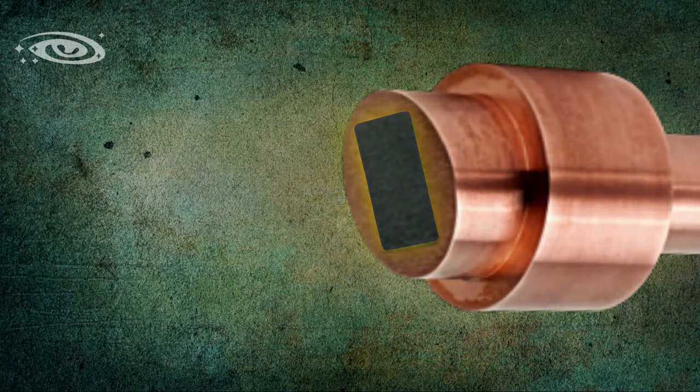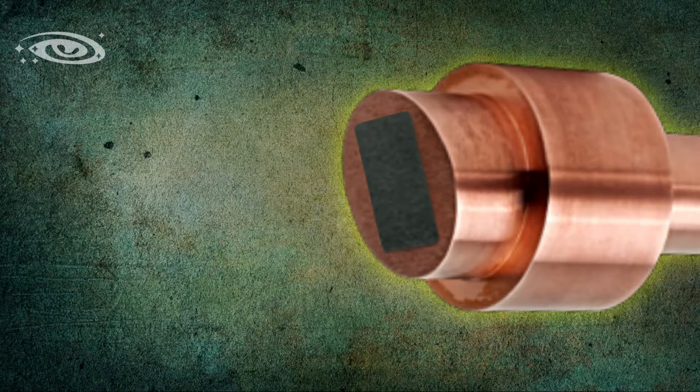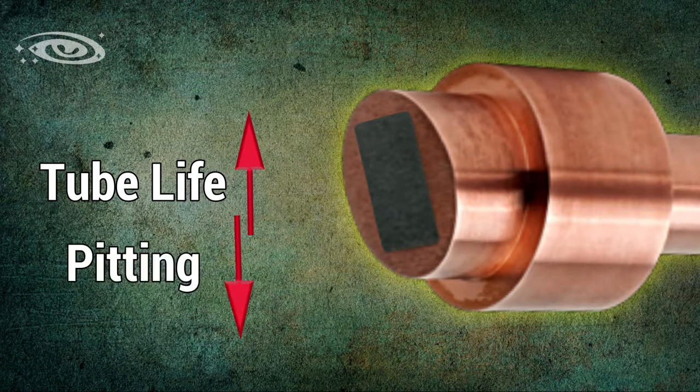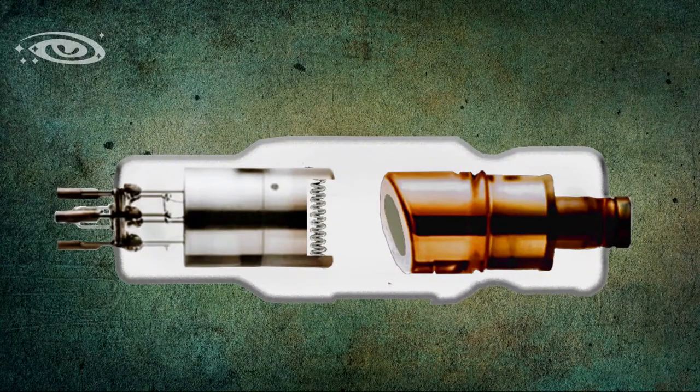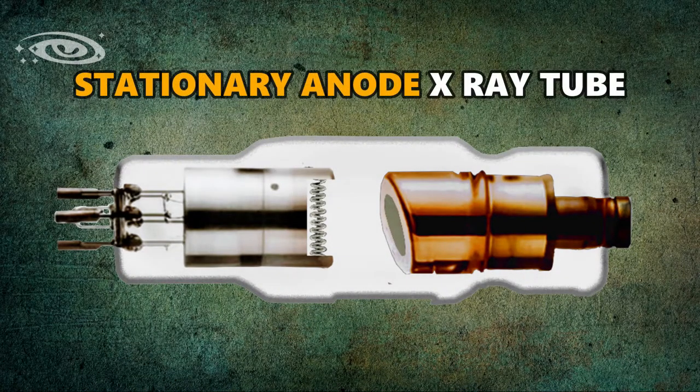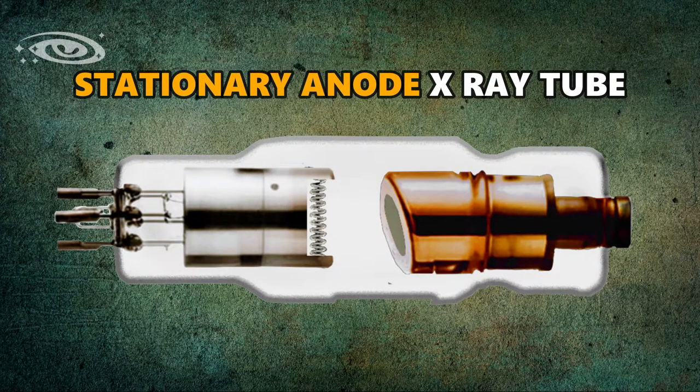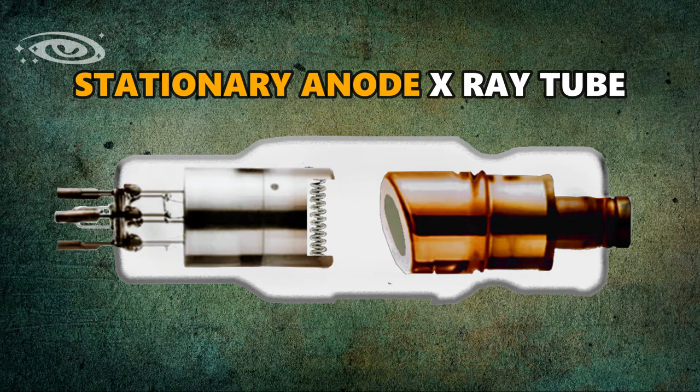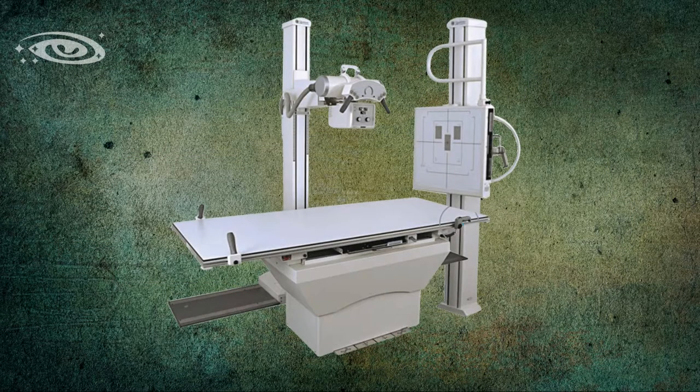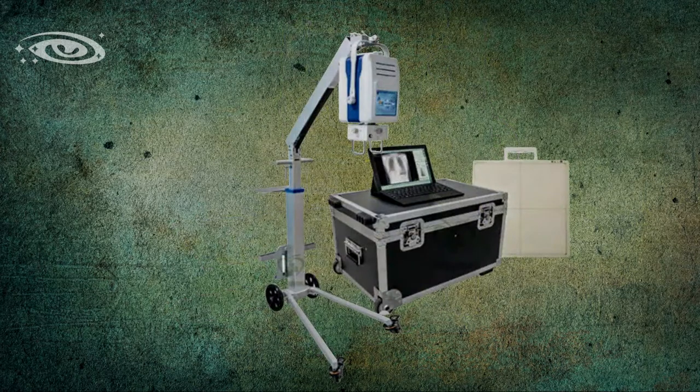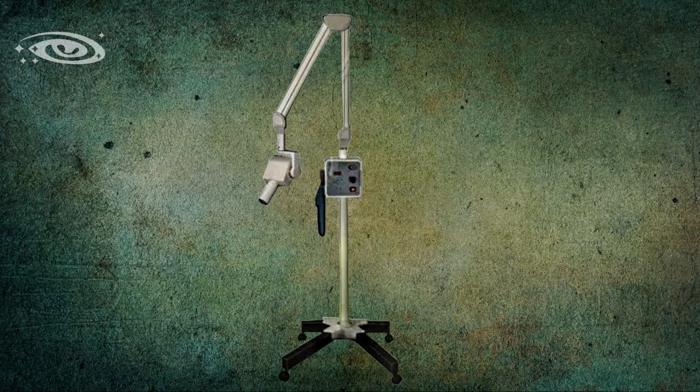And this X-ray tube is named as stationary anode X-ray tube. And this stationary anode X-ray tubes were used in general radiography machines, portable X-ray machines, dental X-ray machines, mobile X-ray machines, and fluoroscopy machines.